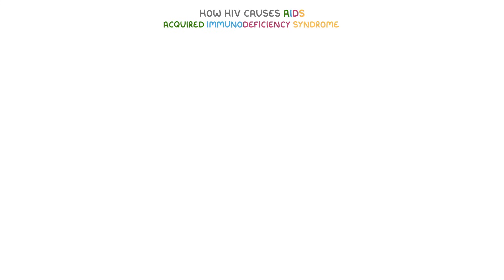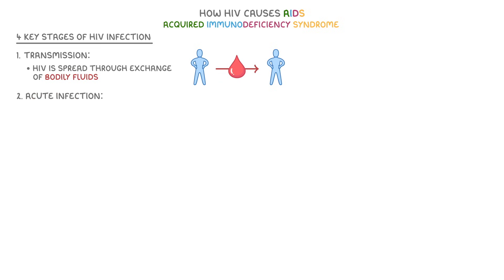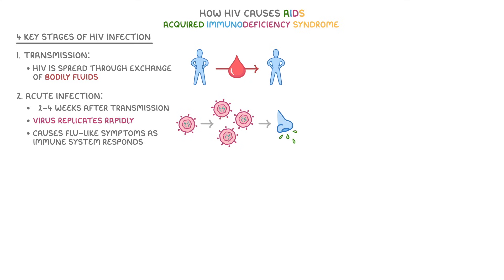Finally, let's cover how HIV causes AIDS, which stands for Acquired Immunodeficiency Syndrome. There are four key stages of HIV infection. The first is transmission, which occurs when HIV is spread through the exchange of bodily fluids, such as blood or sexual fluids. The second stage is acute infection, which happens about two to four weeks after transmission, where the virus replicates rapidly and causes flu-like symptoms as the immune system responds to it.